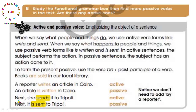مثال آخر: she sends it to Tripoli - هي ترسله إلى طرابلس. أخذنا it المفعول به وحطيناه في البداية، وضعنا verb to be ثم الفعل بالتصريف الثالث. فأصبحت: it is sent to Tripoli. We don't need to add 'by a reporter' هنا لأن ما يهمنا هو الفعل والخطوات التي يمر بها المقال، وليس من كتبه أو أرسله.